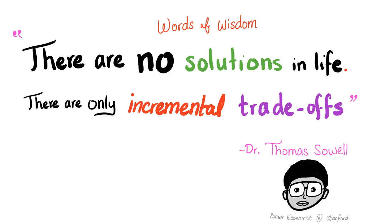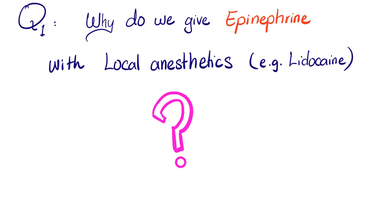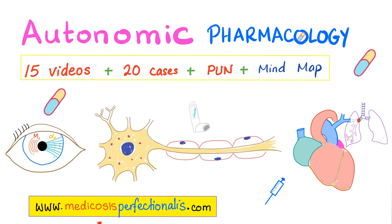Question of the day: why do we give epinephrine with local anesthetics? Let me know the answer in the comments — you'll find the answer key in the next video. If you like this video, you'll love my autonomic pharmacology course on my website, medicosisperfectionist.com. It comes with videos, cases, notes, and two mind maps — one for cholinergic, one for adrenergic. I also have another course for CNS pharmacology.